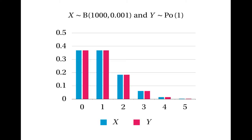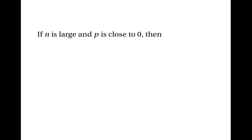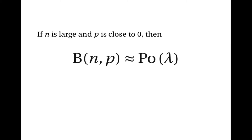So the binomial distribution and the Poisson distribution are very closely related. What you need to remember is that if n is large and p is close to 0, then the binomial distribution with parameters n and p is approximately the same as the Poisson distribution with parameter lambda, where lambda is equal to n times p. This means that if n is large and p is close to 0, then the Poisson distribution can be used to approximate binomial probabilities.